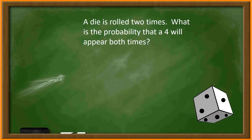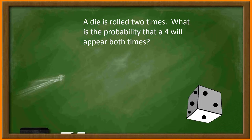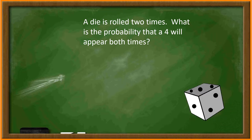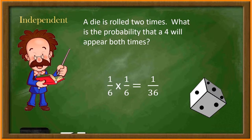A die is rolled two times. What is the probability that a four will appear both times? The probability of rolling a four is one out of six because there is only one four out of the six numbers. Since rolling a die does not remove the four from the options, the probability of rolling a four on the second roll is still one out of six. So the answer will be one sixth times one sixth, which is one thirty-sixth.